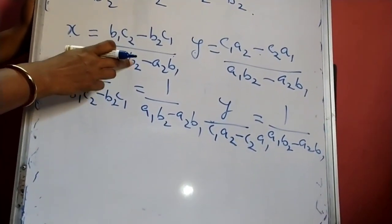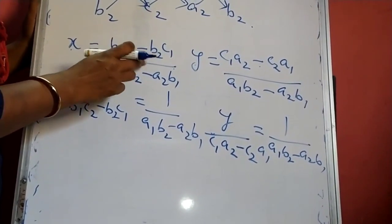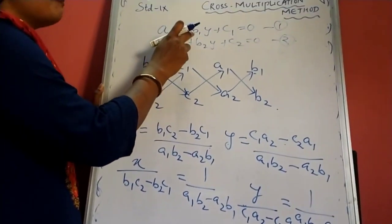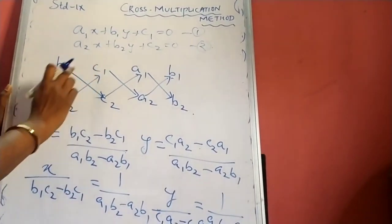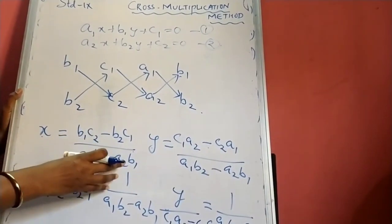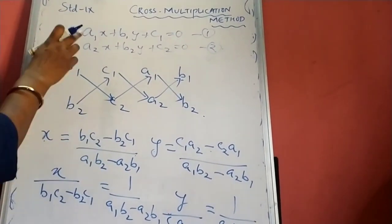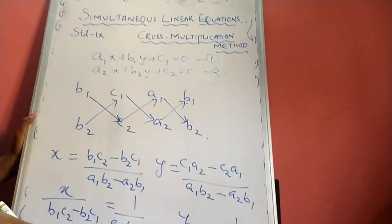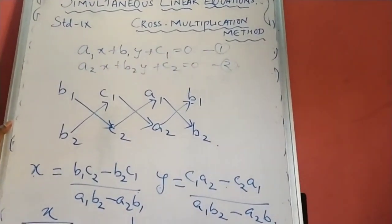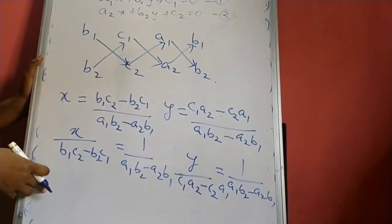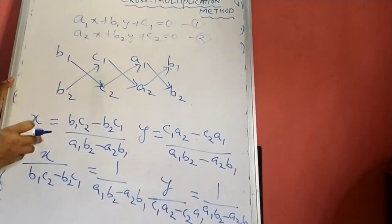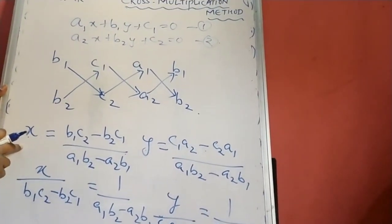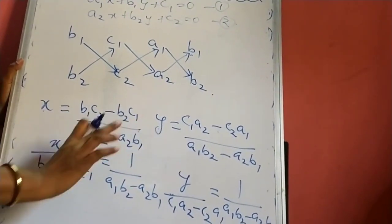Here, A1, B1, B2, C1, C2 — all of these are the real numbers that are present in a pair of linear equations. This is the expression for solving a pair of linear equations by the cross multiplication method. Now let me do some questions from our textbook exercise 5.3 to make you understand how the cross multiplication method works to find out the value of the variables X and Y.